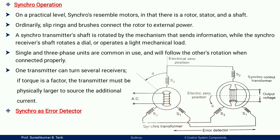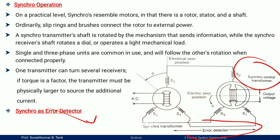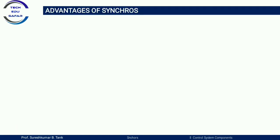One type of synchro is an error detector. The synchro control transformer uses this error detector. In the figure, the electrical zero position is shown along with S1, S2, S3 terminals, and the output voltage is given to the error detector to find the error in the synchro.